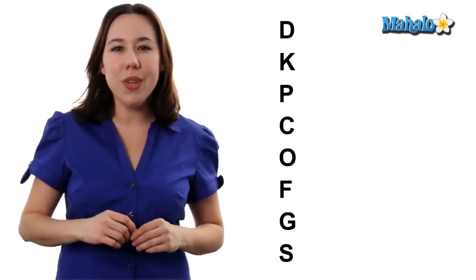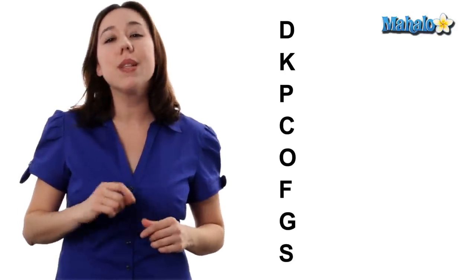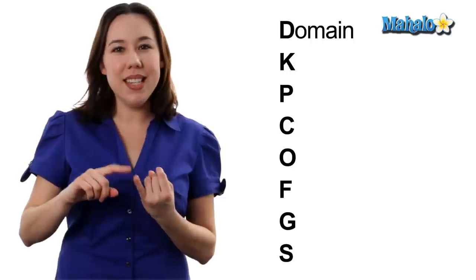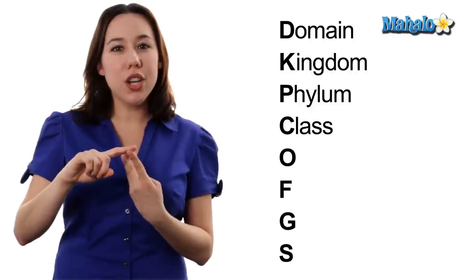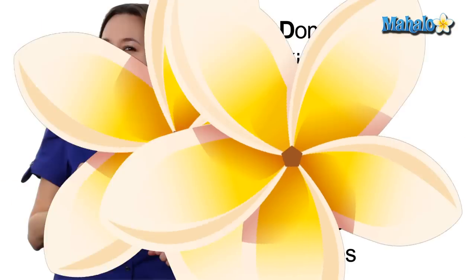A fun little way to remember all these different levels of classification and the order they go in goes a little something like this: Dead kings play cards on fat green stools.